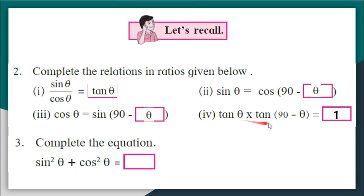So this is the relation between tan theta and tan 90 minus theta. Matlab, tan 30 into tan 60 is 1. Okay. We also studied one more identity that sin square theta plus cos square theta is nothing but 1. So these were a few things that we needed to recall.